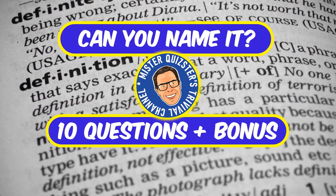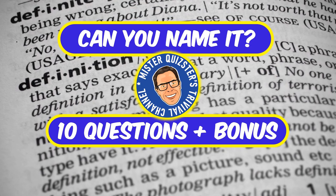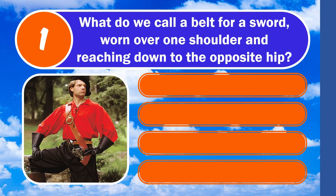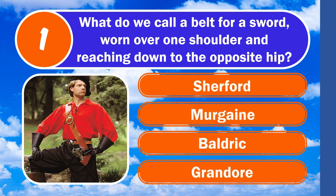Don't miss the bonus question right after question number 10. Here we go. Question number one: what do we call a belt for a sword worn over one shoulder and reaching down to the opposite hip? Is it Sherford, Mergain, Baldrick, or Grandeur?